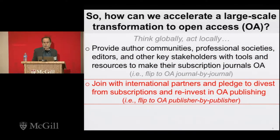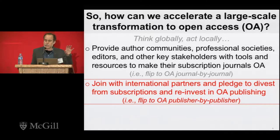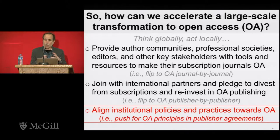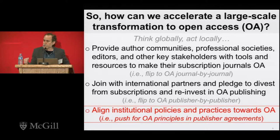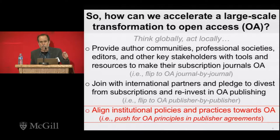The second strategy has been to join with international partners and pledge to divest from subscriptions and reinvest in open access publishing — an attempt to flip to open access publisher by publisher. The third strategy is to align our institutional policies and practices towards open access. While we've been loudly calling for open access and change in commercial publishing, we've continued giving millions of dollars to publishers to sustain a subscription system we all want to change. The idea now is to put our money where our mouth is — pushing for open access principles in our publisher agreements when we have the leverage, when we have the money we're about to spend.